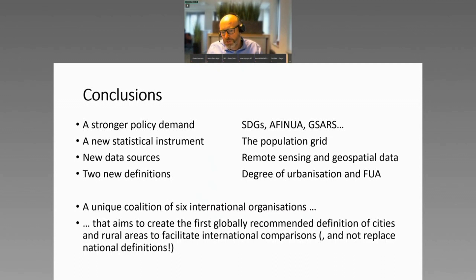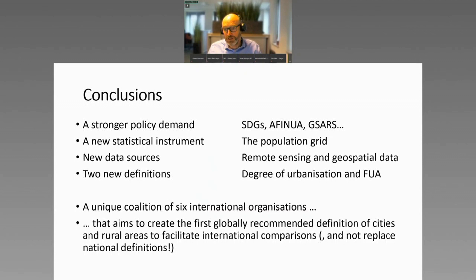Wrapping up, there was clearly a policy demand for this definition — the Sustainable Development Goals, lots of requests to collect urban, rural, and city data; the action framework to implement the new urban agenda, AFINUA, from UN Habitat, again with lots of urban indicators; and also requests to collect rural data. It was only through this new instrument, the population grid, that we were able to crack this resistant definition. Remote sensing played a massive role in facilitating this conversation.